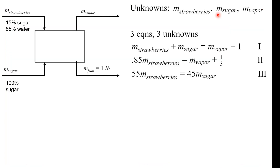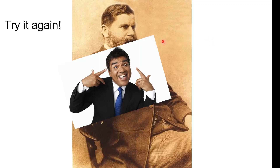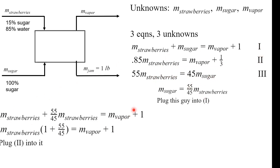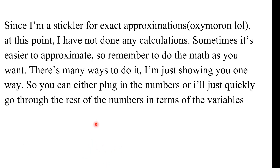It's algebra time. If you got this far, great — but if not, pause the video and try the algebra yourself. I have three unknowns in a system of equations. To solve for the mass of strawberries, I start by rearranging the third equation. Since I want to solve for sugar, I plug that into equation one. Then I use equation two as well. I prefer solving in terms of variables rather than plugging in numbers right away, because I tend to make errors with numbers — but it's an approximation either way.